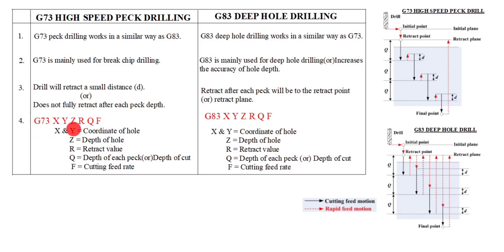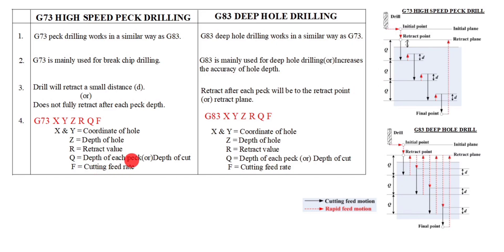This is the G73 code: G73 X Y Z R Q F. X and Y are the coordinates of the hole. Z is the depth of the hole — it starts from here up to here. R is the retract value — from here to here. Q is the depth of each peck, or depth of cut. F is the cutting feed rate.